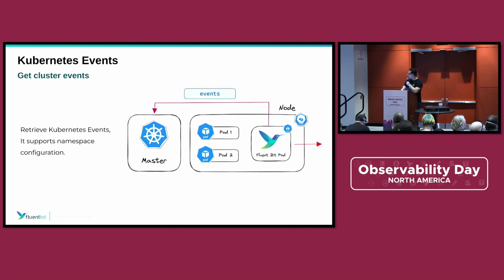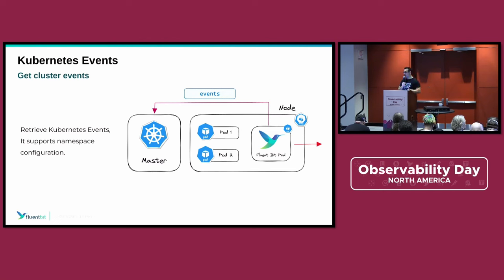We just shipped the connector to retrieve Kubernetes events. Kubernetes events are all events that happen in the Kubernetes cluster, which you can use for security purposes, audits, or to understand what's happening inside your cluster. So FluentBit also has a native connector for that.